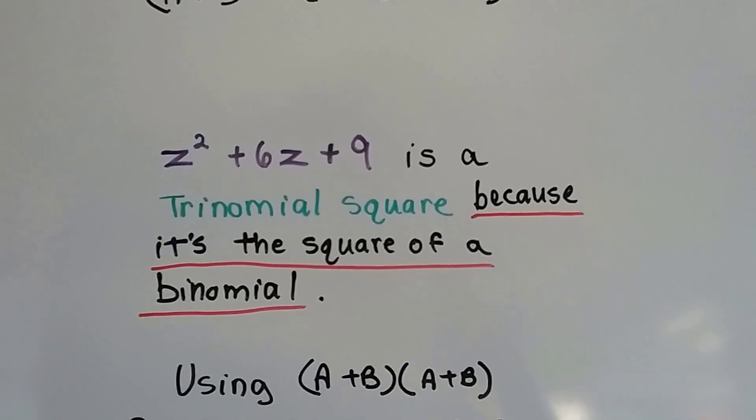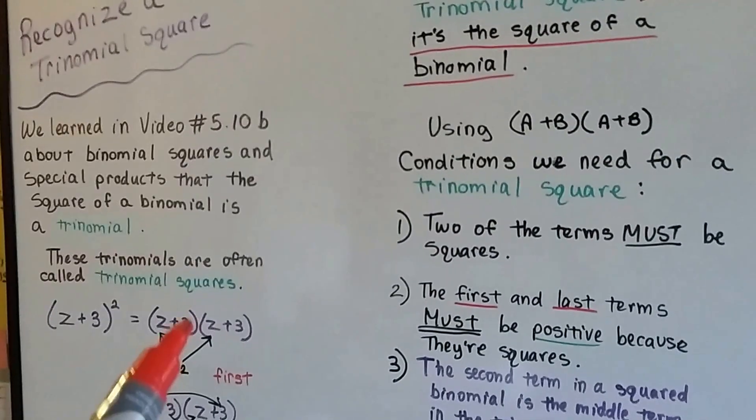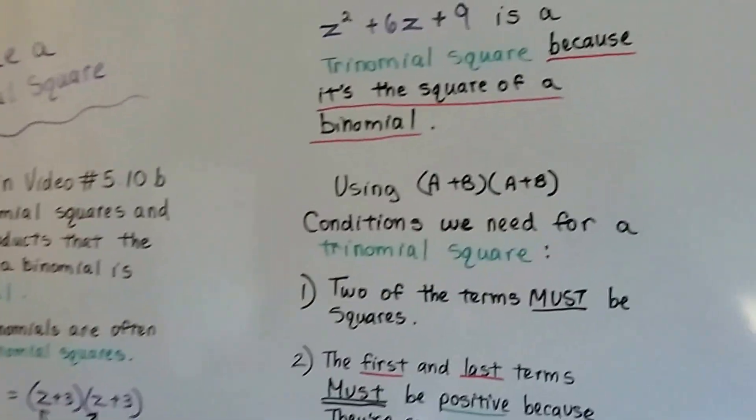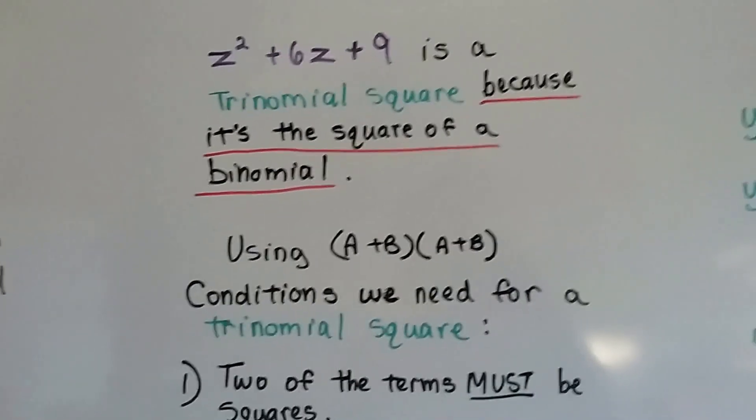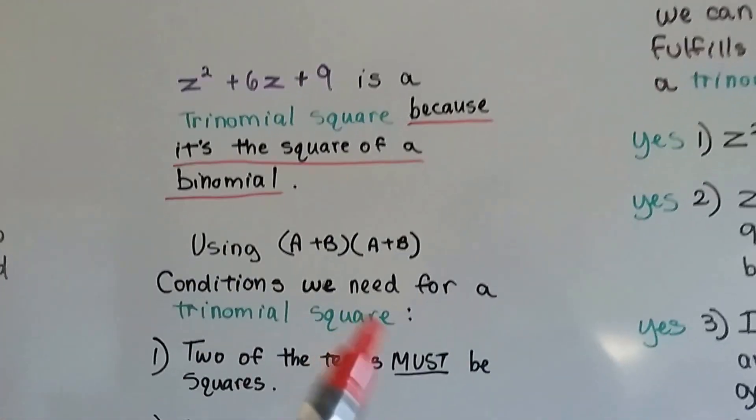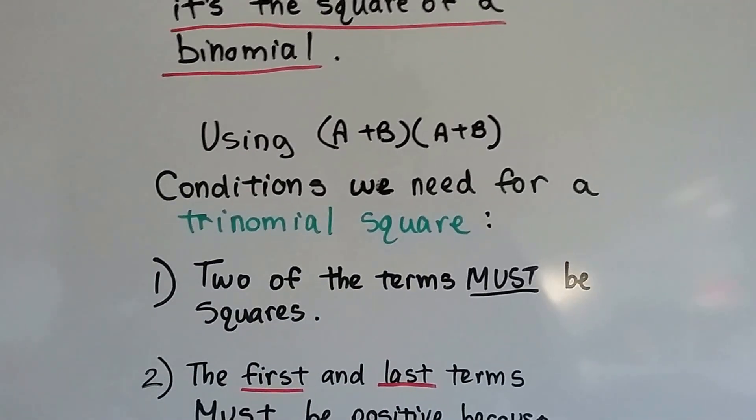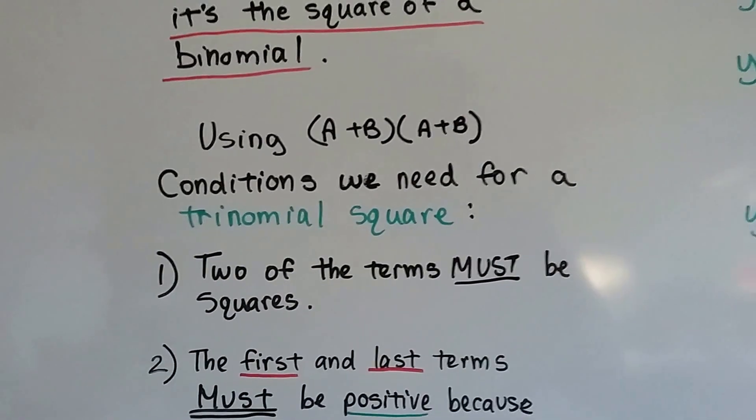It's a trinomial square because it's the square of a binomial. It's the square of this binomial. That's what makes it a trinomial square.